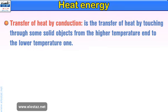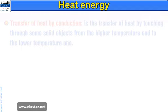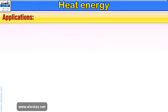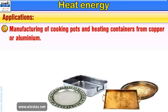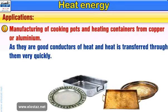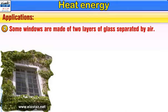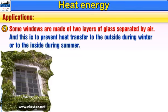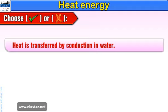Knowledge of heat transfer by conduction led to some applications that man uses in everyday life. These applications include: one, manufacturing of cooking pots and heating containers from copper or aluminium, as they are good conductors of heat and heat is transferred through them very quickly. Two, some windows are made of two layers of glass separated by air to prevent heat transfer to the outside during winter or to the inside during summer.